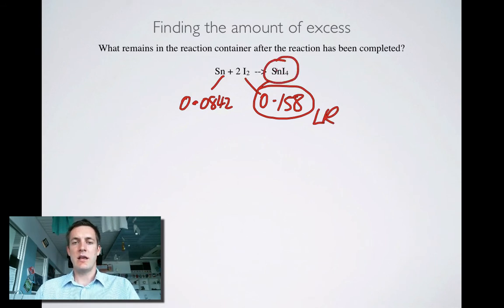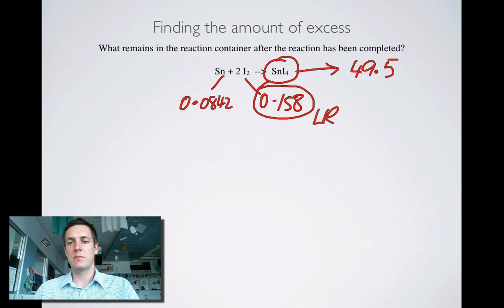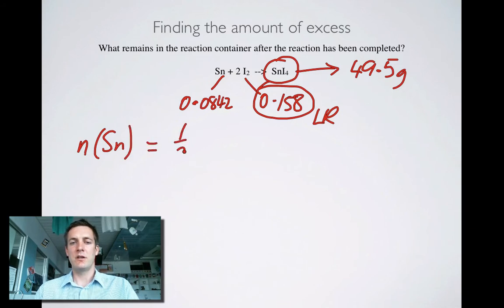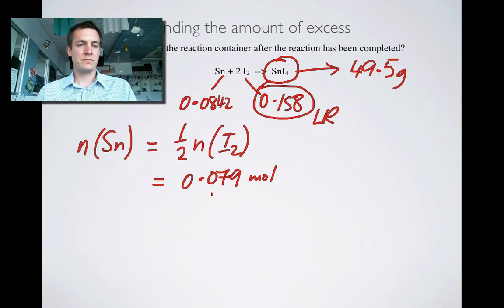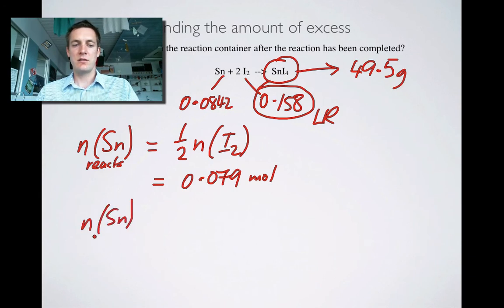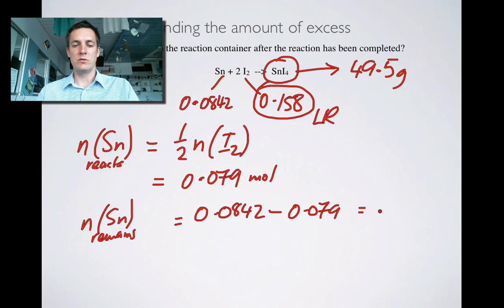Okay? So as well as our, we've just calculated what remains in the reaction container, we've calculated how much product there was, that was 49.5 grams of tin iodide. There's also going to be some of this left over. How much is going to be left over? Well, the number of moles of tin that reacts is equal to half the number of moles of iodine, which equals half of that, which is 0.079 moles, as we saw before. So that means, this is the number of moles of tin that reacts. That means the number of moles of tin that remains is going to be the number that you started with, 0.0842 minus the amount that reacts. And that equals 0.0052 moles.